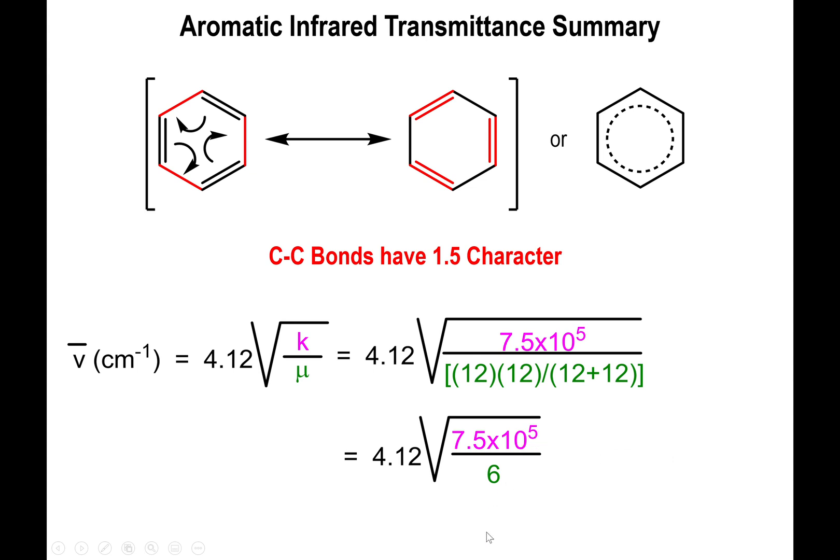So divide 7.5 times 10 to the 5 by 6 and take the square root of it and multiply that value by 4.12, and you find out that the expected frequency of absorption for the aromatic carbon-carbon bonds is in fact at about 1500 inverse centimeters. So this is actually really astonishing and great to see play out with the formula just via the resonance argument of what the benzene ring is doing.